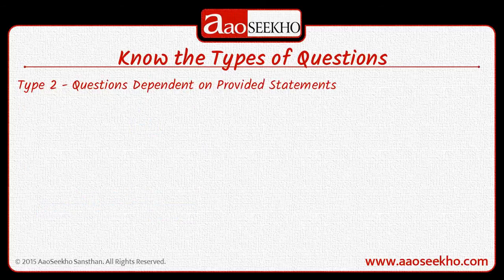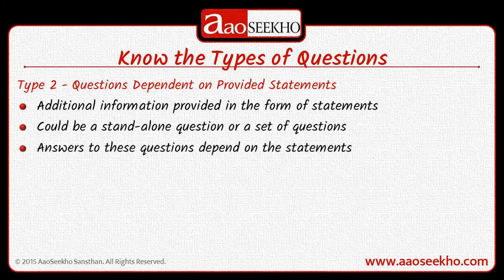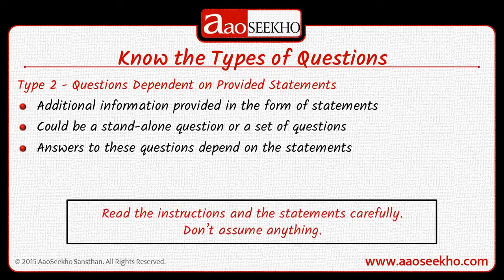Let's move to the next type of questions — questions dependent on provided statements. These questions have some additional information in the form of statements provided along with the questions. The questions and the options mean nothing without these statements. They could be both standalone questions as well as a set of questions. There are many types of such questions, to be discussed later in detail, but we will see a few basic types here. For these questions it's really important to read the instructions very carefully. We cannot assume anything.